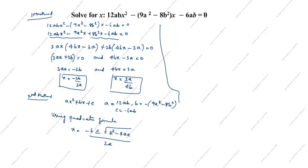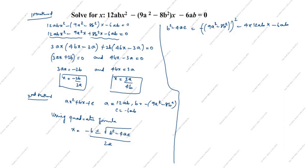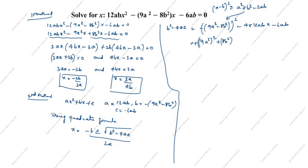First we calculate b² minus 4ac. Here b is minus(9a² minus 8b²), so b² is (9a² minus 8b²)² minus 4 times 12ab times minus 6ab. We apply the (a minus b)² formula: a² plus b² minus 2ab. Since minus times minus gives plus, this becomes (9a²)² plus (8b²)² minus 2 times 9a² times 8b².